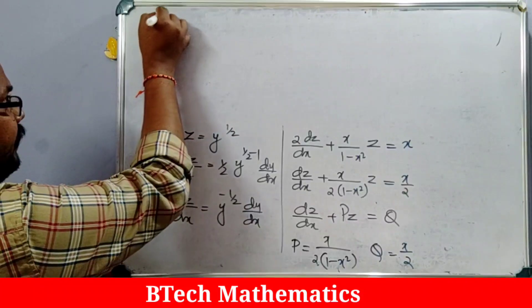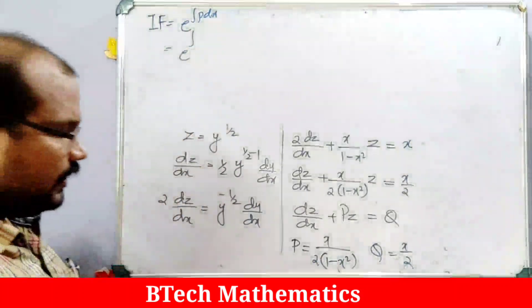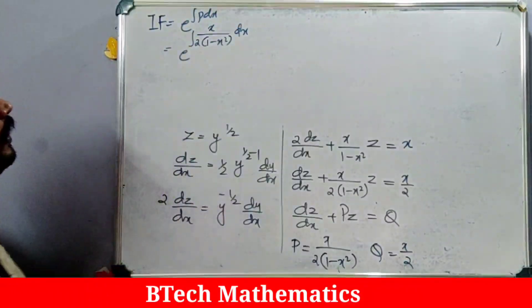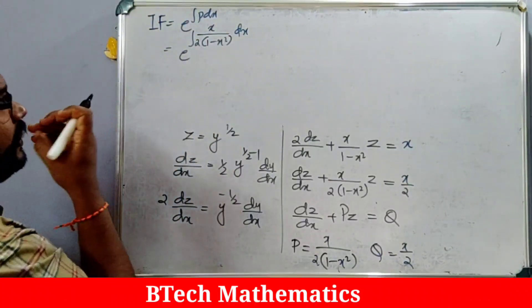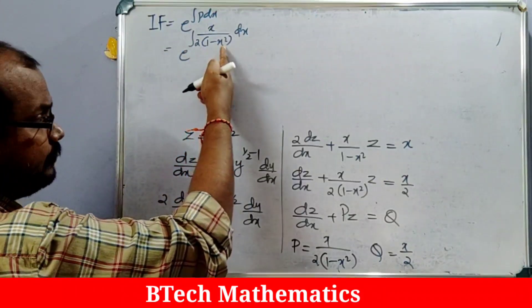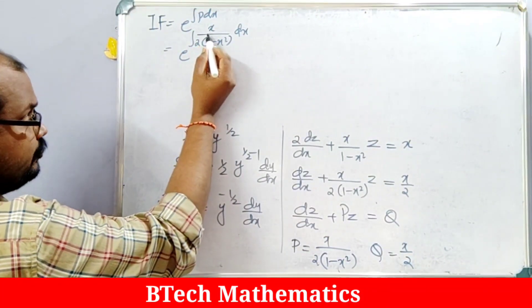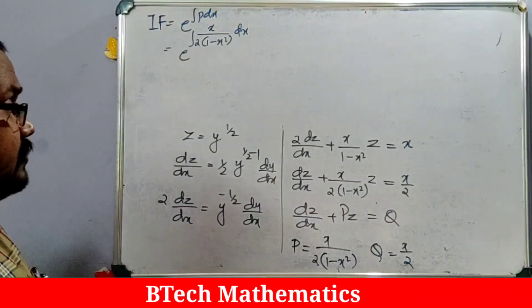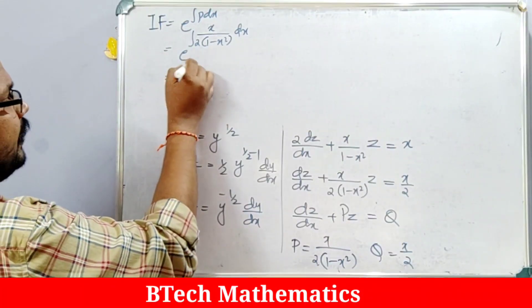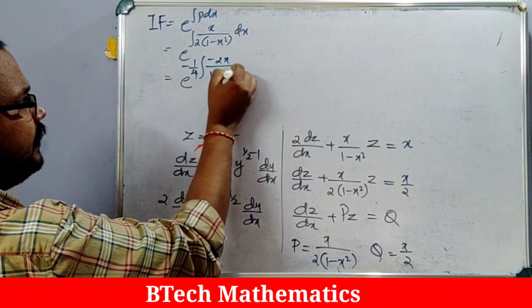Now we find the integrating factor: IF = e^(∫P dx) = e^(∫x/(2(1-x²)) dx). To make the numerator the derivative of the denominator, we multiply numerator and denominator by -2, since the derivative of (1-x²) is -2x. This gives: e^((-1/4)∫(-2x/(1-x²)) dx).